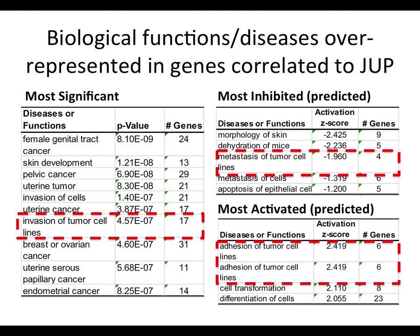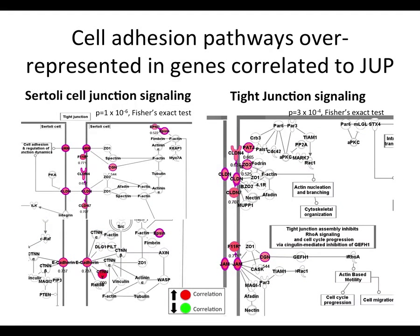Some of the most inhibited pathways — when JUP goes up — are genes important in metastasis and aggressive forms of cancer, which go down. Conversely, the most activated things relate to cell adhesion, which is exactly what junction placoglobin is known for. We're putting biological context to the list we created. I can look at specific cell adhesion pathways — everything colored here was on our list of 152 genes. Green means negatively correlated, red means positively correlated. This makes biological sense.